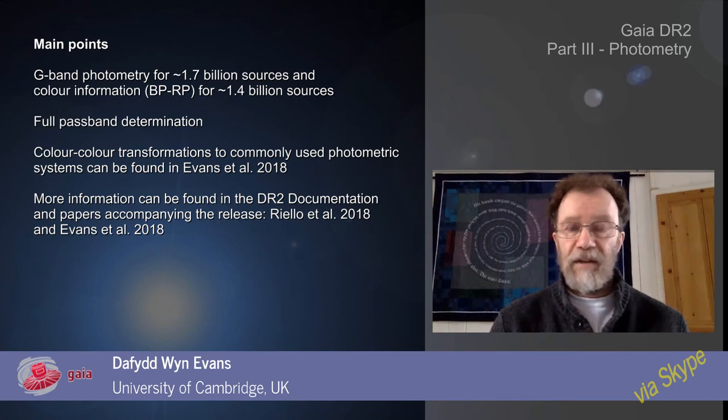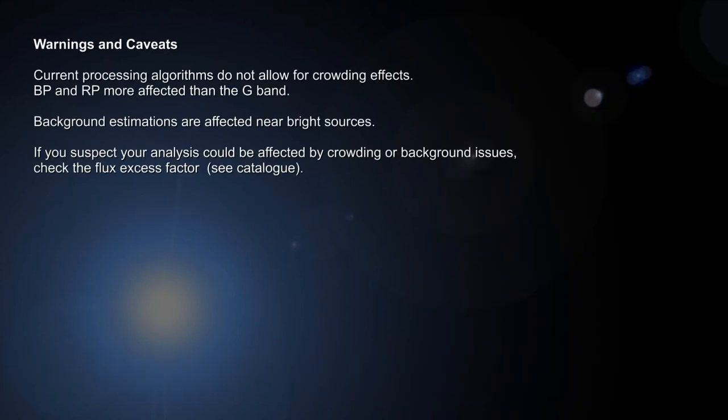As with all data, there are some warnings and caveats. The current processing algorithms do not allow for crowding effects. This affects BP and RP more than the G band due to their larger window sizes. Also, the background estimations are affected near bright sources, and that includes planets.